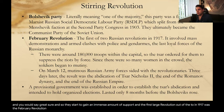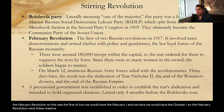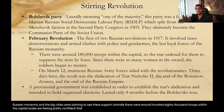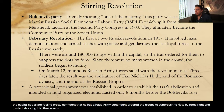The first large revolution out of two in 1917 was the February Revolution — the first of two, with the October one to follow. The February Revolution consisted of these massive demonstrations and armed clashes with police and paramilitary forces. The Russian monarchy in the big cities were starting to see their support dwindle. There were around 180,000 troops within the capital, so the Tsar — feeling pretty confident about his huge army contingent — ordered the troops to suppress the riots by force and start shooting into the crowds.